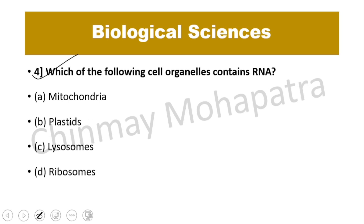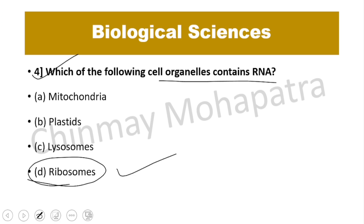Question number 4: Which cell organelle contains RNA? The answer is ribosomes. Ribosomes are associated with protein synthesis during translation, and RNA is associated with them.